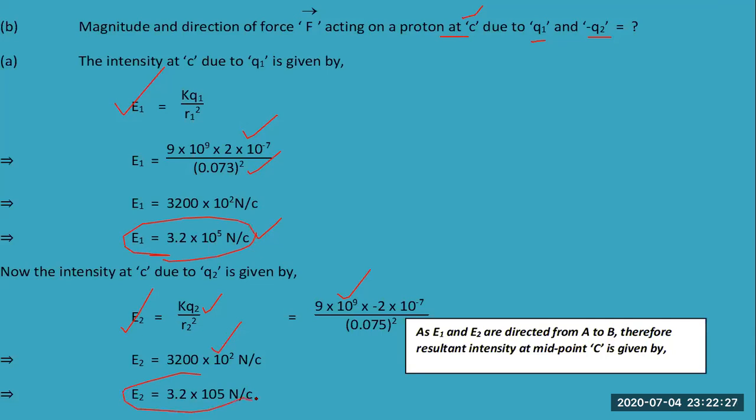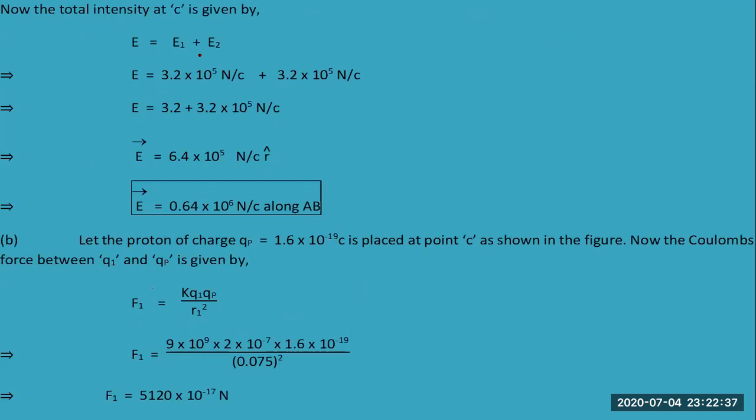You are calculating intensity from both charges, and the resulting intensity will be the sum of E1 and E2. After adding, you get the total intensity acting, and this unit vector will show the direction of the intensity. If you convert it into newtons per coulomb, it equals 6.4 × 10^5 N/C along AB.